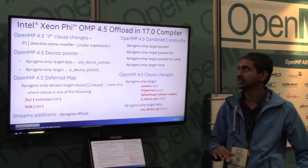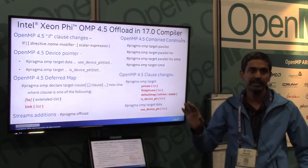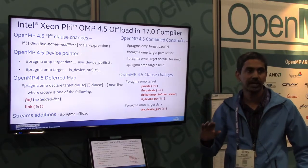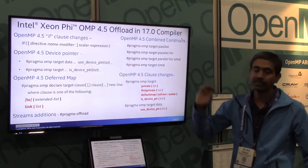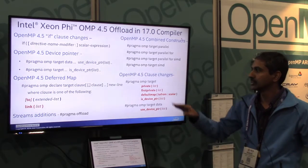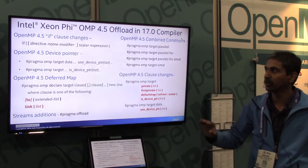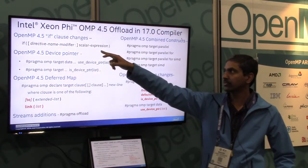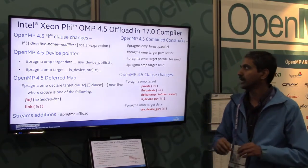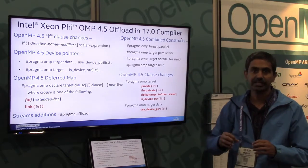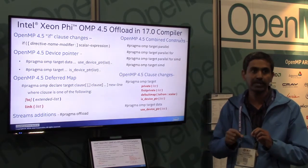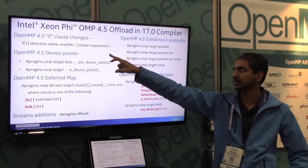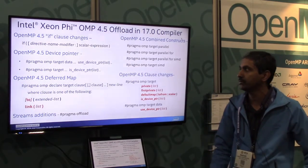These are some of the 4.5 features, and all OpenMP 4.5 offload constructs are supported in the Intel 17.0 compiler. This is a quick summary of the major pieces added in 4.5. We have if clauses — you can have a combined construct and say if that applies only to the parallel part or the target part. That is a new addition in 4.5.